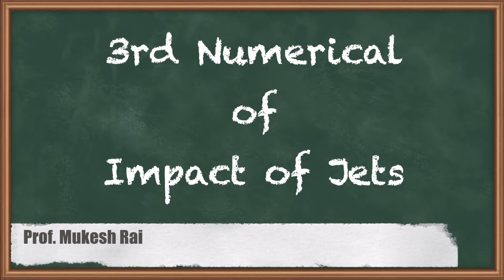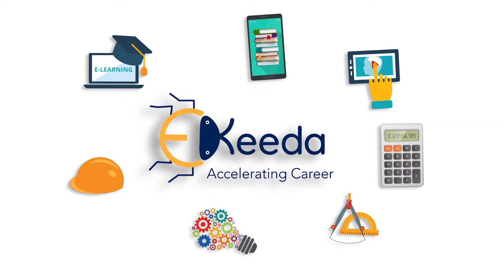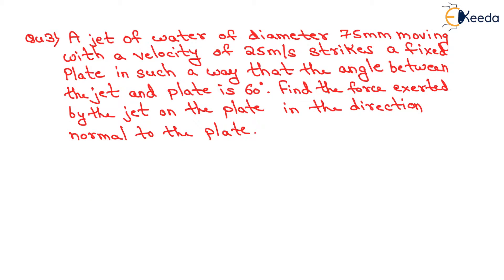Hello students, today we are going to solve the third numerical of impact of jet. Question is given as: a jet of water of diameter 75 mm moving with a velocity of 25 meter per second strikes a fixed plate in such a way that the angle between the jet and plate is 60 degrees. Find the force exerted by the jet on the plate in the direction normal to the plate.